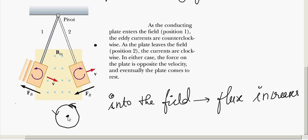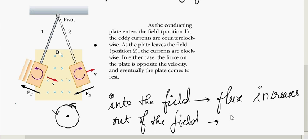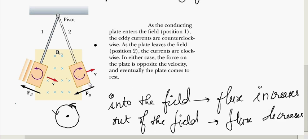Similarly, at the other end, the copper plate is coming out of the field. When it moves out, the flux decreases. Therefore the current induced must be in such a direction that it tries to increase the field, opposing the cause producing it. So the current flows in the clockwise direction, and a clockwise current produces a cross field at the center — inside the copper plate we get a cross field.